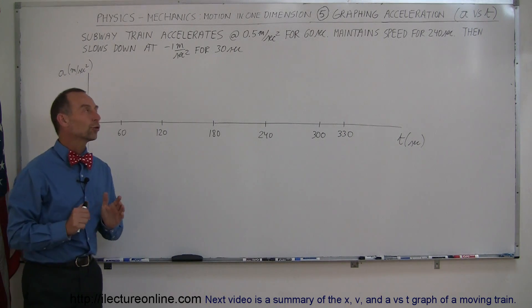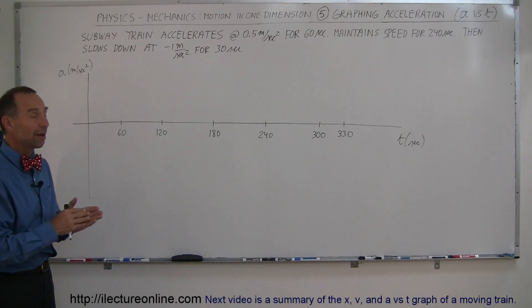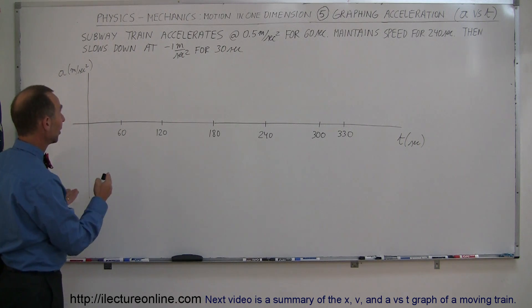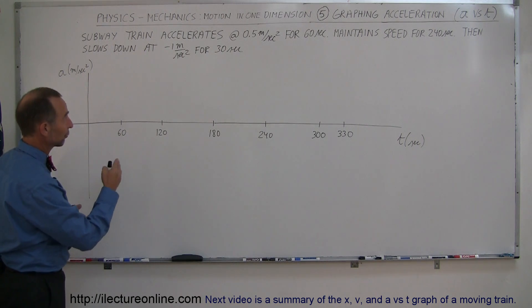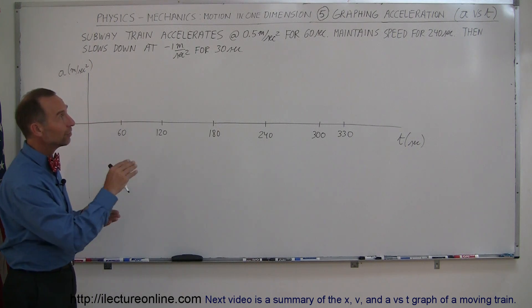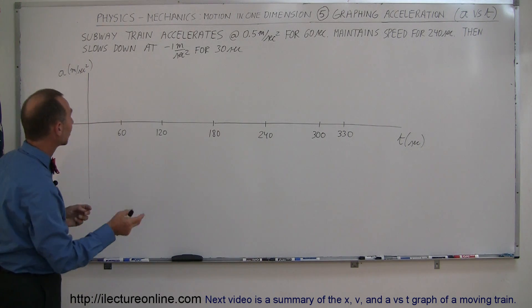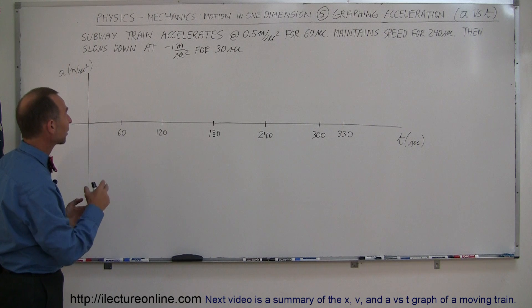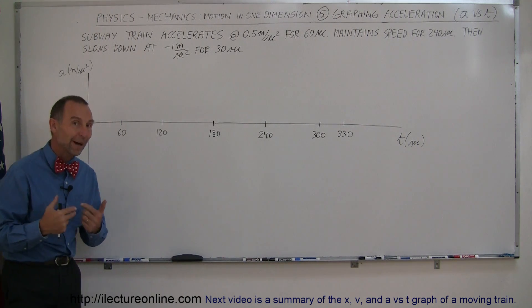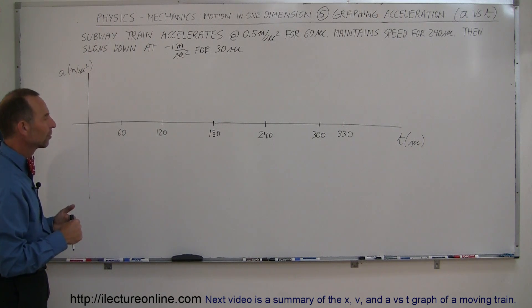In this video we're going to show you how to make an acceleration versus time graph. We're taking the subway train that starts from rest, accelerates for the first 60 seconds at 0.5 meters per second squared, then it maintains that speed for the next 240 seconds, and then it slows down back to zero, decelerating at minus 1 meter per second squared for 30 seconds.